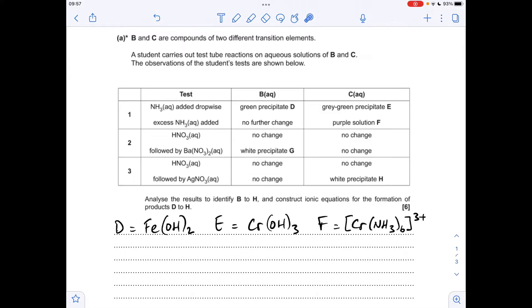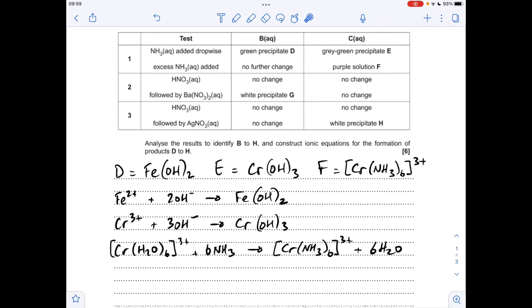I'll just do the equations now. For the production of the hydroxide precipitates I'm doing the short versions. For the production of F we need to use the full formula, so [Cr(H₂O)₆]³⁺ is what's reacting with those six ammonia ligands and we get a ligand substitution reaction where all six H₂O's are replaced by six ammonias.